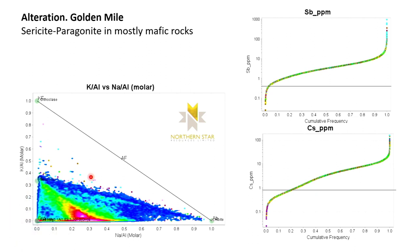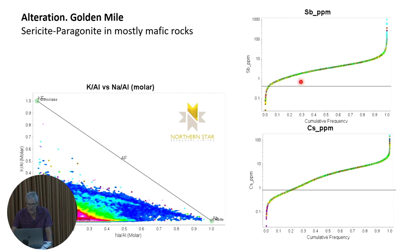Here's the full Golden Mile dataset — about 60,000 analyses. On the molar ratio diagram, 90% of the rocks here are mafics so the initial starting composition is down in here, but you can see a really really distinct linear trend in that data — a physical mixture of muscovite and paragonite. There are bucket loads of paragonite in here. The probability plots for antimony and cesium in that data show that in this dataset the most anomalous pathfinder element is antimony.